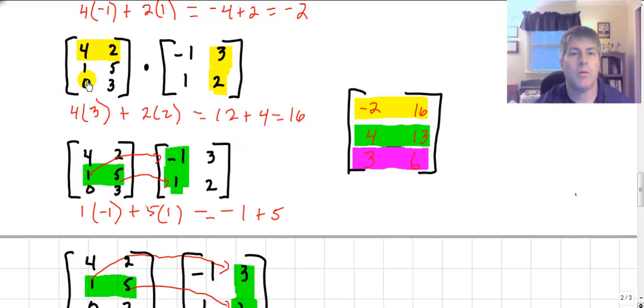And so when I multiply these two together, we got our new matrix of the elements negative 2, 16, 4, 13, and 3, 6. So we did get a 3 by 2 matrix as our result.